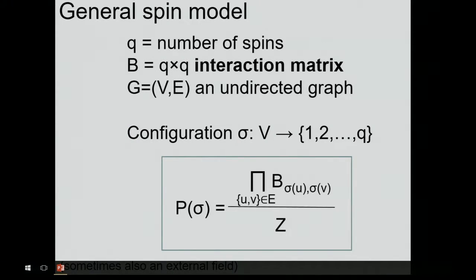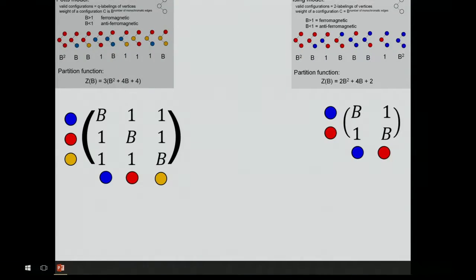I'll talk a little about general spin models. In a general spin model, you have some number Q, which is the number of spins. You have some interaction matrix B with no negative entries. You look at a labeling of the vertices of the graph by spins one up to Q, and the weight of the configuration is the product over all edges of the entry in matrix B indexed by the two endpoints. For the Ising model you have a two-by-two matrix; for the Potts model you have a three-by-three or larger matrix.